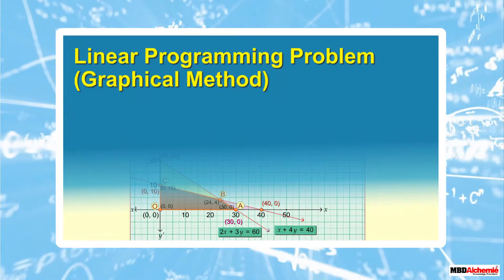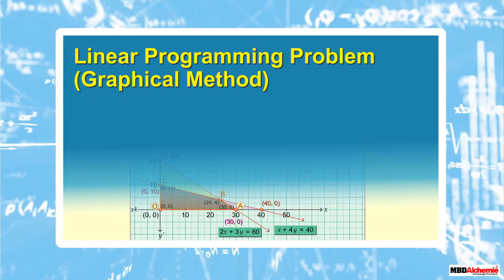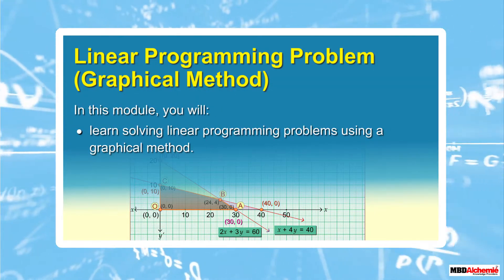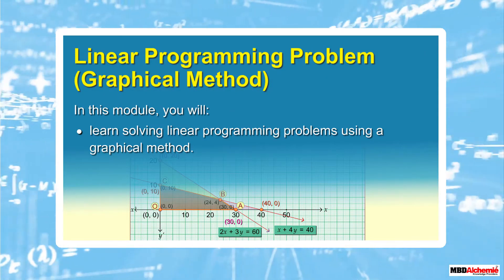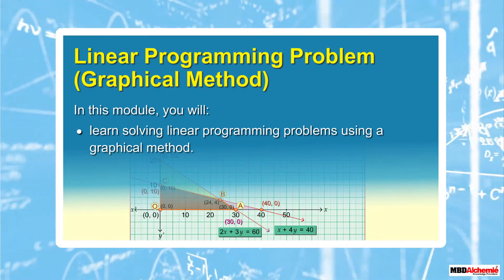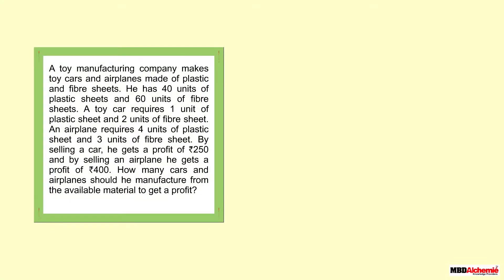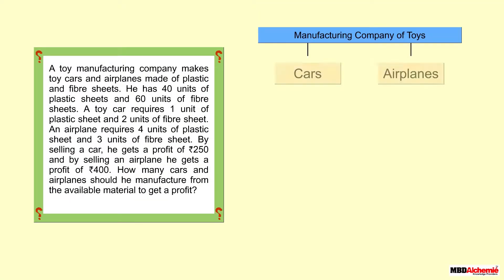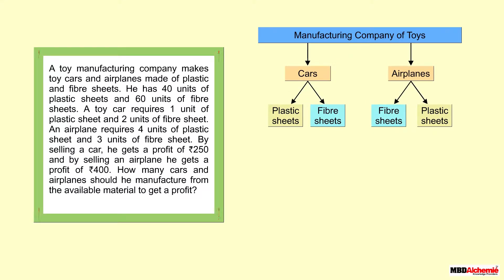Linear programming problem — graphical method. In this module you will learn solving linear programming problems using a graphical method. Suppose a manufacturing company makes two types of toys. It uses plastic and fiber to make these toys, and the company wants to earn maximum profit on selling the toys. Let's see this problem and solve it.